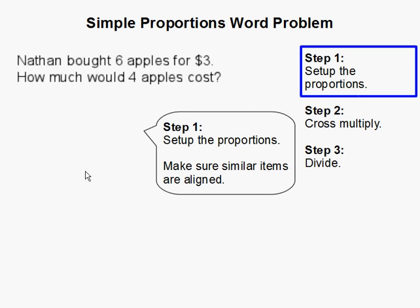Step one: Set up the proportion. We must identify the two things that the word problem is working with, and that is apples and cost. So I'm going to put apples over cost, then set up an empty proportion and fill in the values given in the word problem. Six apples is for three dollars, so I'm going to put six on top since I have apples on top, and at the bottom I'm going to put the cost of three dollars.